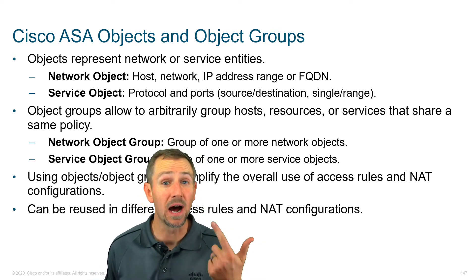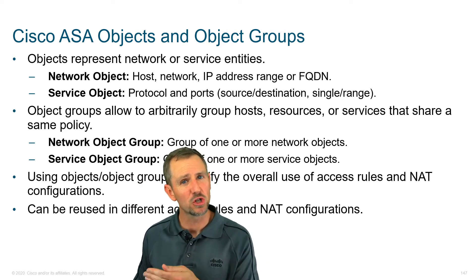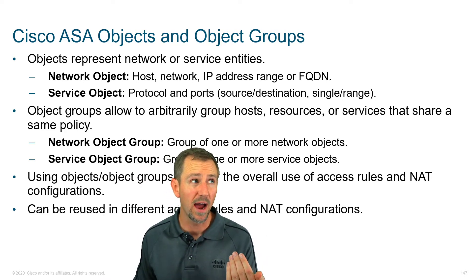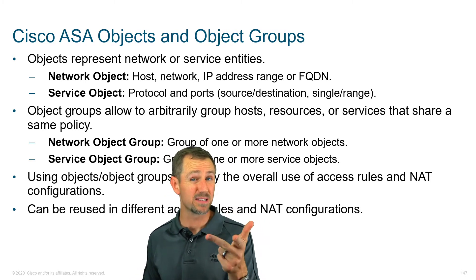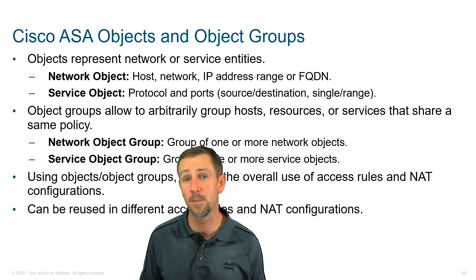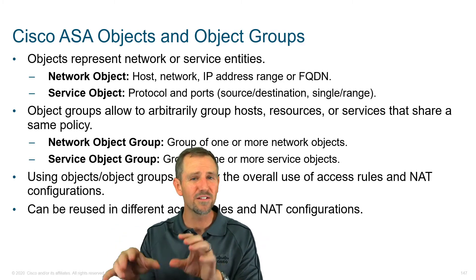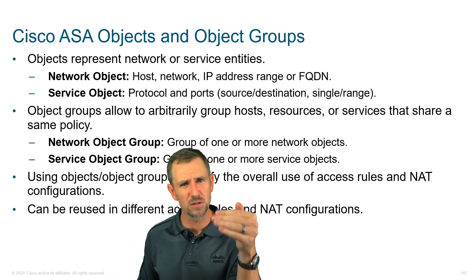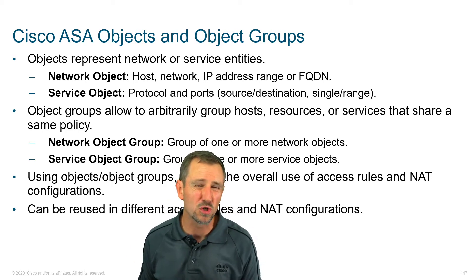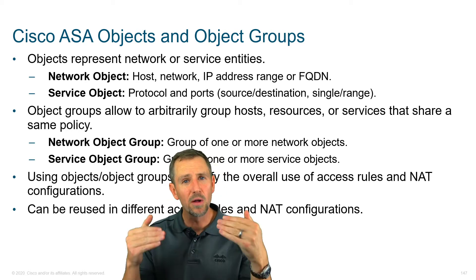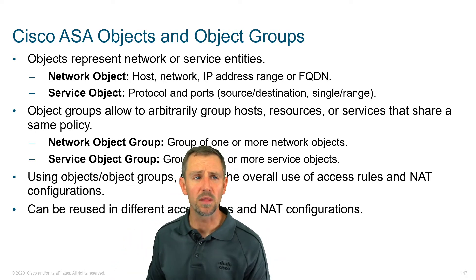Let's take a look at objects and object groups. Objects are named definitions of hosts, and those hosts can be defined either by an individual IP, by a range, by a subnet, as well as a fully qualified domain name. A lot of times I'll go in and quickly define my servers — web server, mail server, DNS server, SharePoint, source code repository — giving meaningful names that let me look at the configuration and know what I'm dealing with.